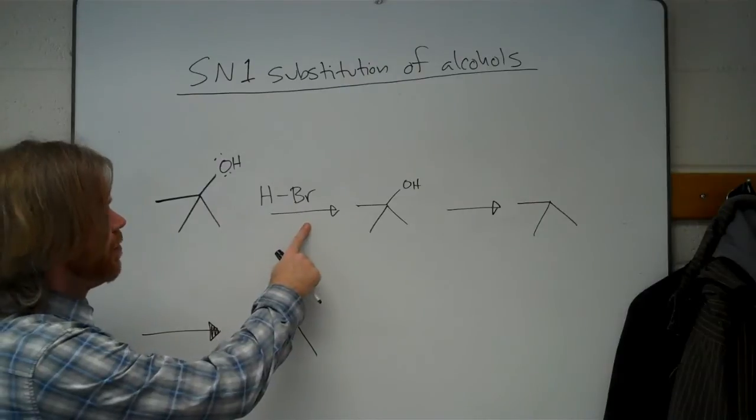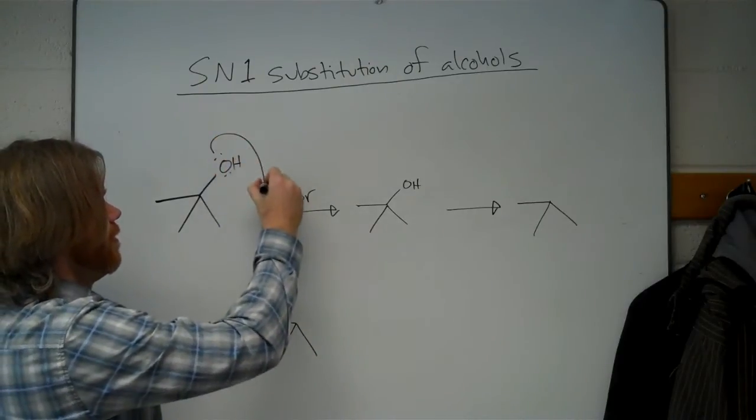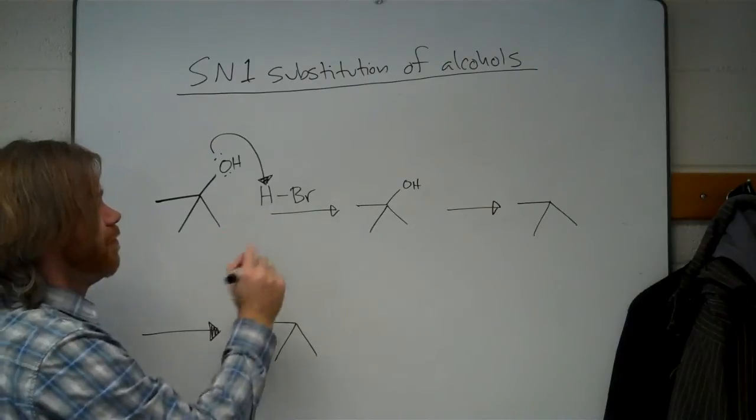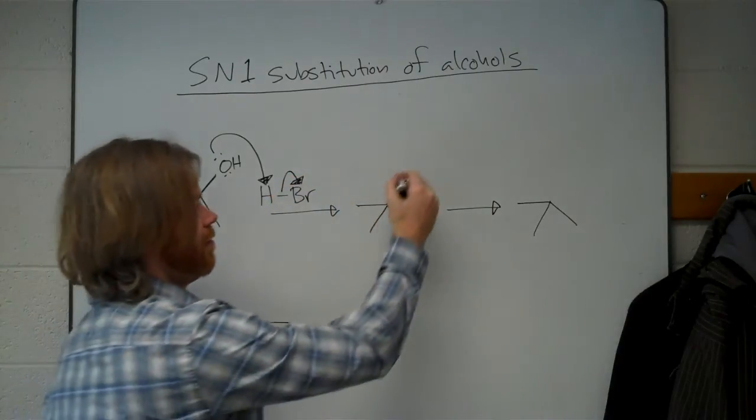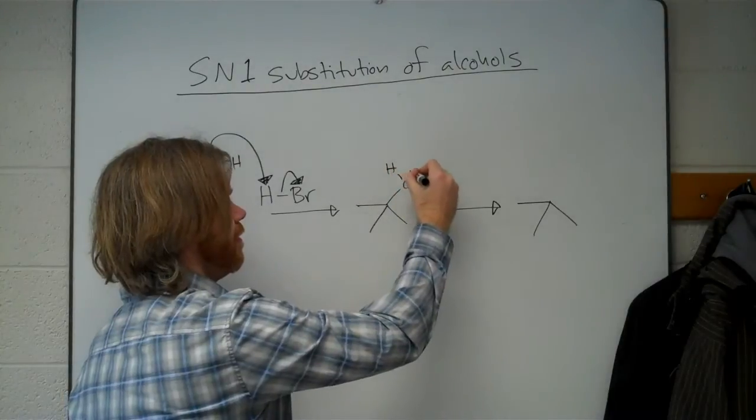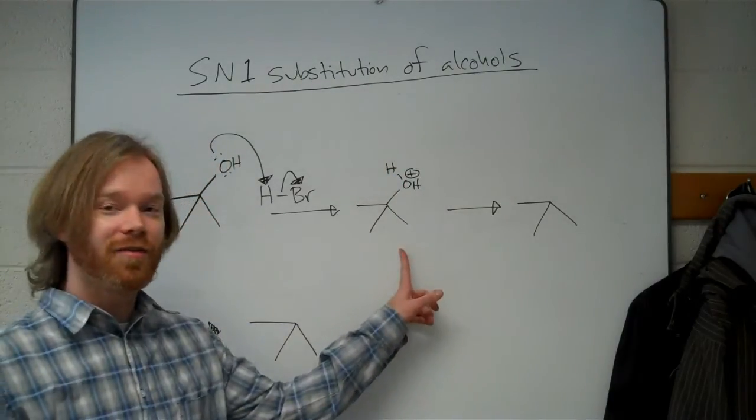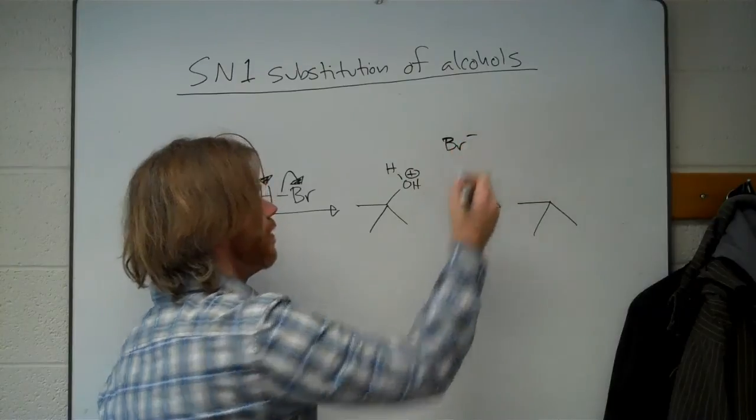So here we're using hydrobromic acid, so the hydrogen, the acidic hydrogen adds to the oxygen, breaking our HBr bond. So now we have essentially water attached to our carbon group and bromide left over.